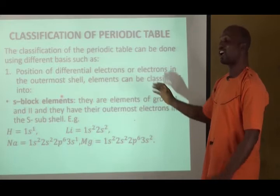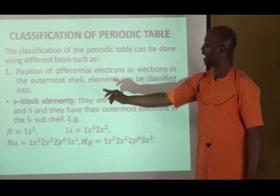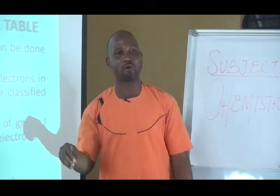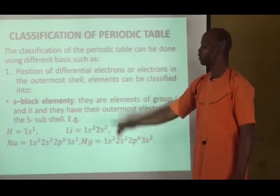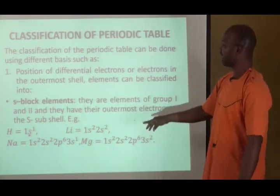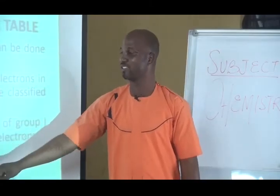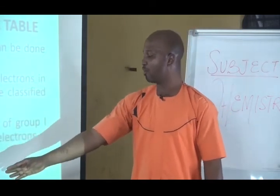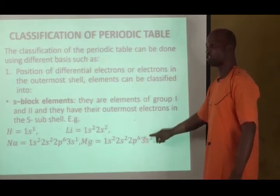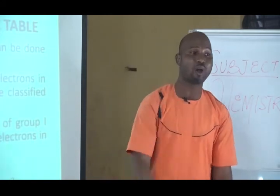S-block elements have their differential electron found in the S-subshell. That is why group 1 and group 2 elements are called S-block elements — their outermost electrons are in the S-subshell. For example, hydrogen is 1s1, so the outermost subshell is 1S, making it an S-block element. Lithium's outermost subshell is 2S. Magnesium has its outermost shell as 3S. Remember, S-block elements are elements of group 1 and group 2.